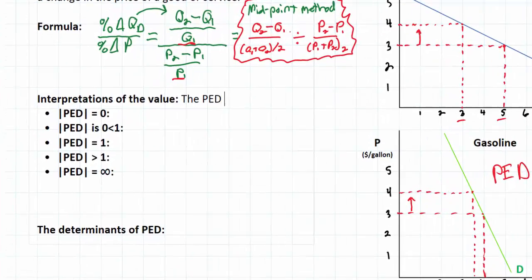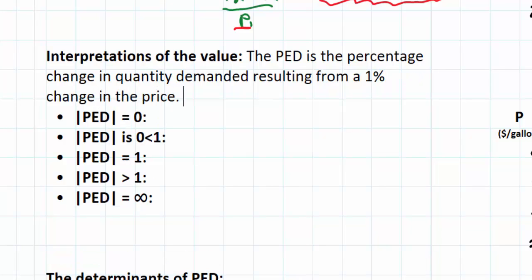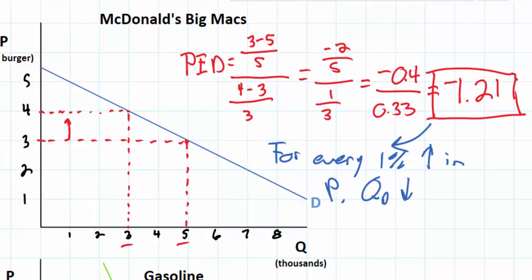The PED is the percentage change in quantity demanded resulting from a 1% change in the price. That's what PED is. So in the case of McDonald's hamburgers we can interpret this value here. For every 1% increase in the price, the quantity demanded decreases by 1.21%. That's exactly what PED is. It's how much quantity demanded will fall for every 1% increase in price.